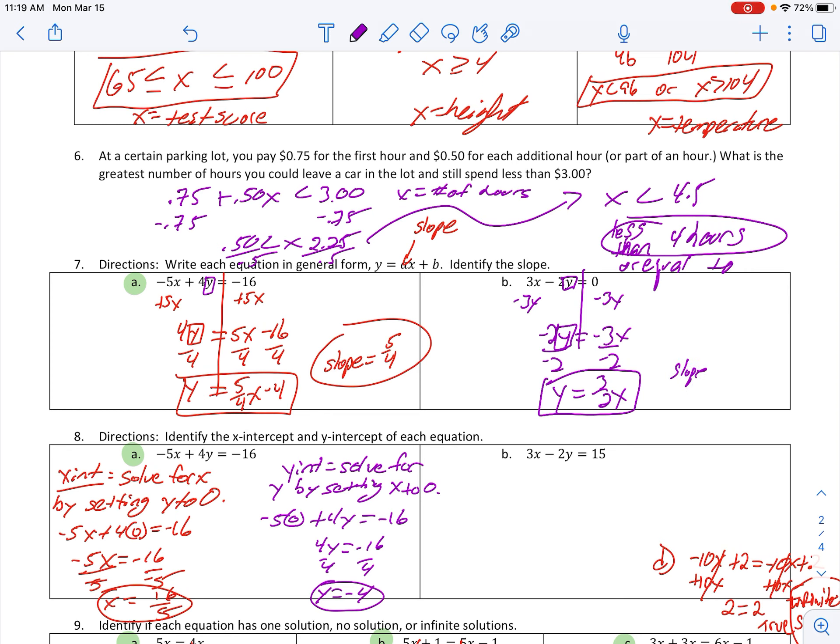Now, the slope in this case, they also want you to identify, is going to be 3 halves. That's the number in front of the X. It just so happens it's 3 halves for the slope.